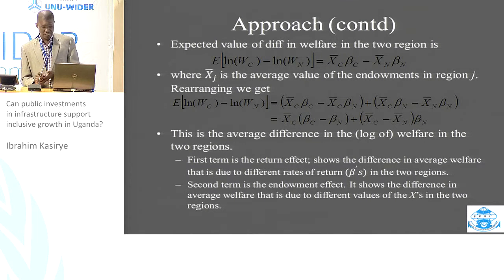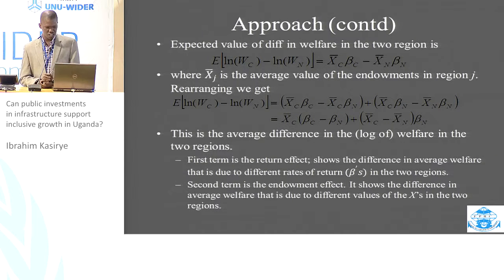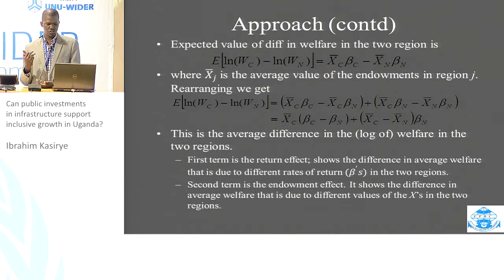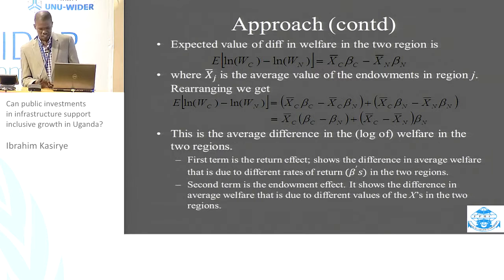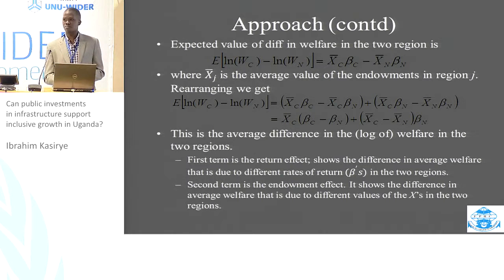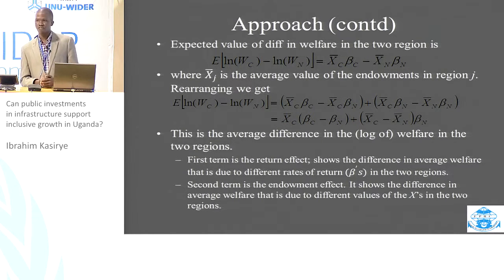We estimate the expected value of the difference in welfare between these two regions. Rearranging the equation, we get the average difference in the log of welfare between the two regions, composed of two terms. The first term shows the return effect — the difference in average welfare due to rates of return, that is the betas, given any two regions, for example central and northern Uganda. The second term is the endowment effect, which shows the difference in average welfare due to differences in the values of the X's, for example education attainment of the household head between the two regions.